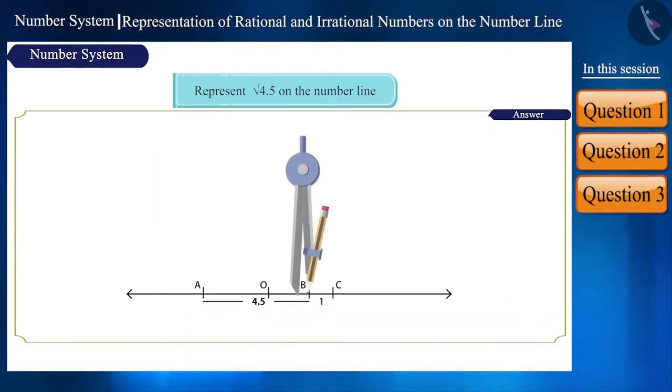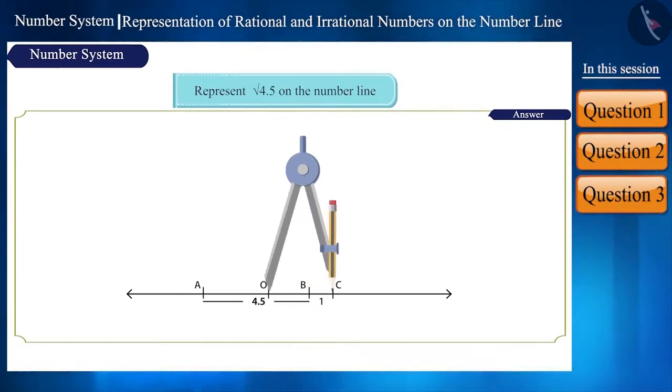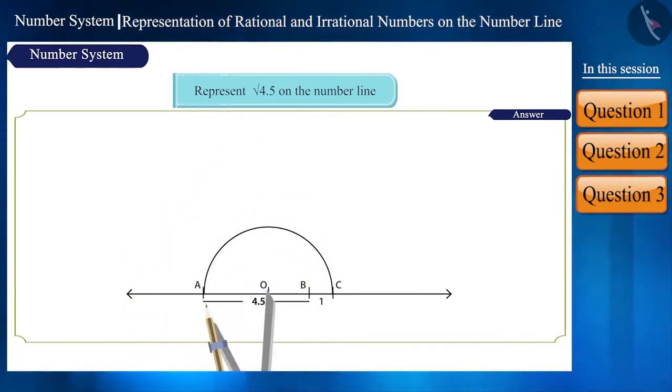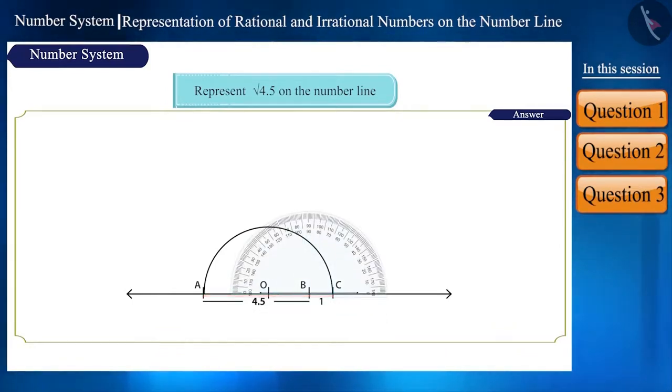Now, taking O as the center, draw a semicircle using a compass. Draw a perpendicular from line AC at point B which would cut the semicircle at point D. On joining O and D, we will get a right-angle triangle OBD.